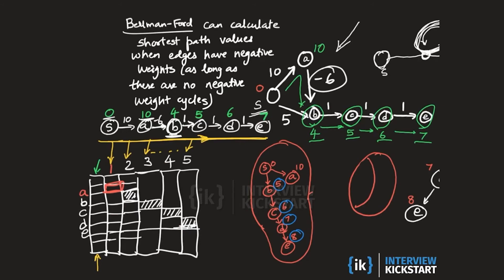One final comment about Bellman-Ford: we saw that we need only two columns at a time for the algorithm to successfully compute all shortest paths. It turns out we can even manage with a single column — we don't even need two columns. We could work off a single column and keep updating the entries in that column, relying on the shortest path values of the predecessors of each vertex.